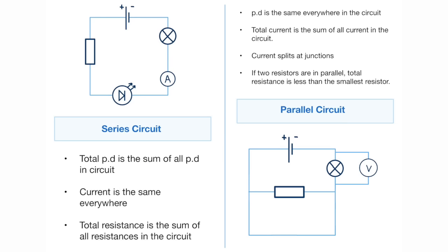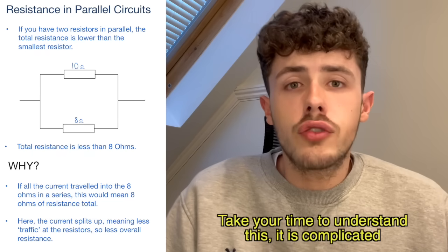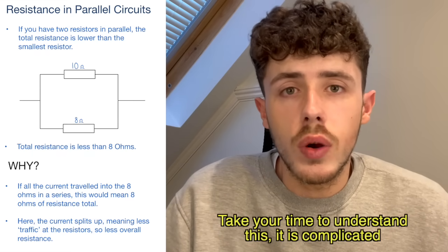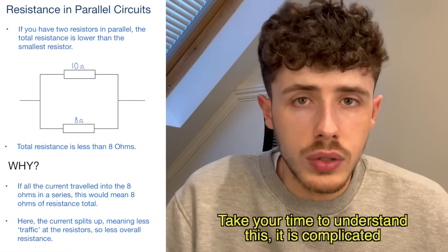Next we have series and parallel circuits. A series circuit is just a single loop that contains everything. A parallel circuit is a bit more staggered where things are on different levels. Here are some important similarities and differences you need to know about series and parallel circuits. For triple students, you also need to understand how resistance works in a parallel circuit.